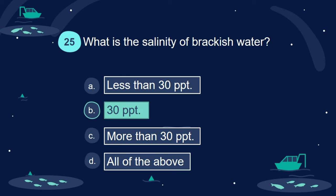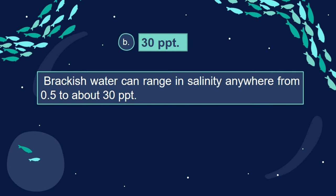Answer: B. 30 ppt. Brackish water can range in salinity anywhere from 0.5 to about 30 ppt.